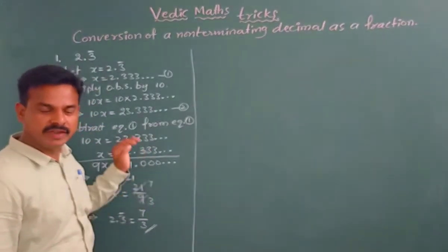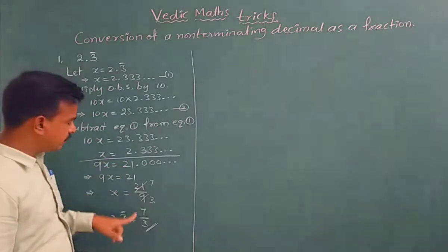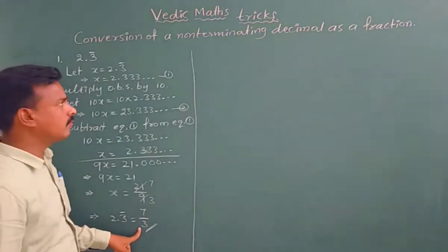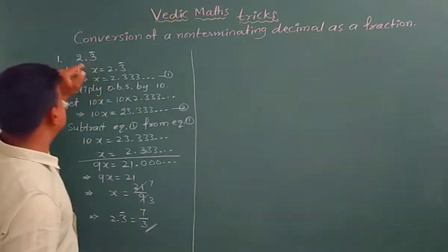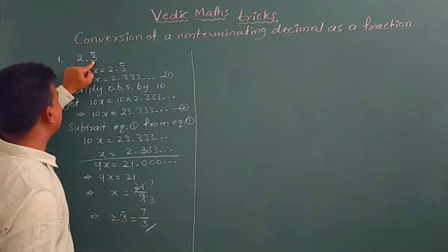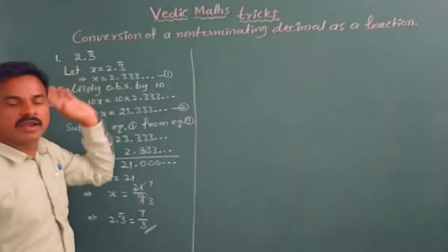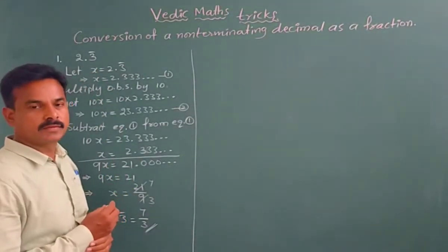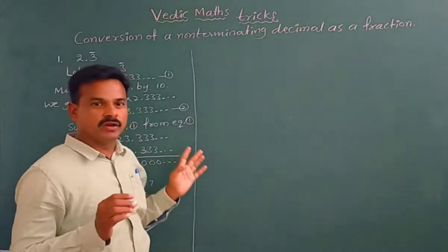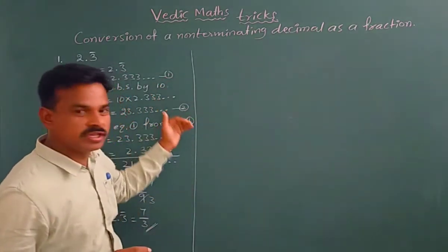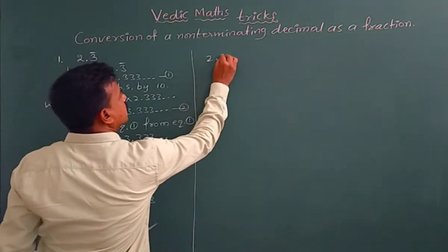Finally we get 2.3 bar is equal to 7 by 3. It will take a minimum 10 minutes. If we do any mistake anywhere in any step we get the wrong answer. But by using Vedic maths we can find the fractional form of this non-terminating recurring decimal in 10 seconds only.